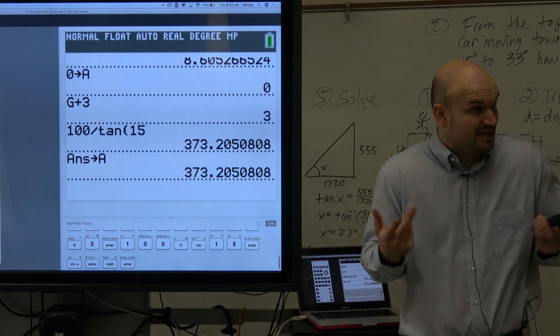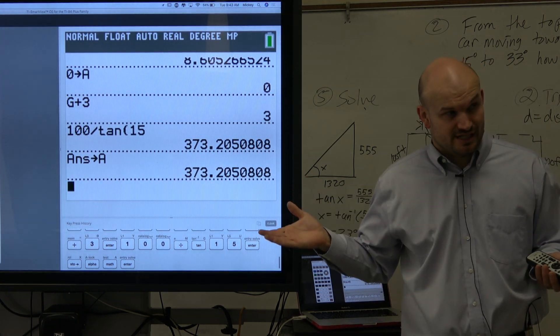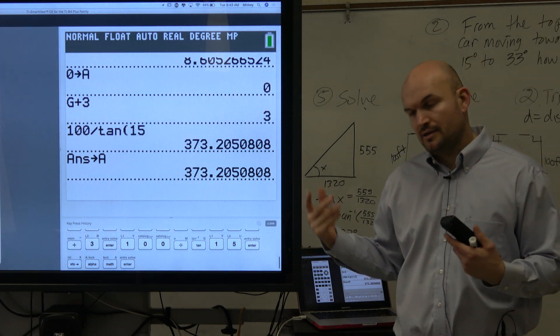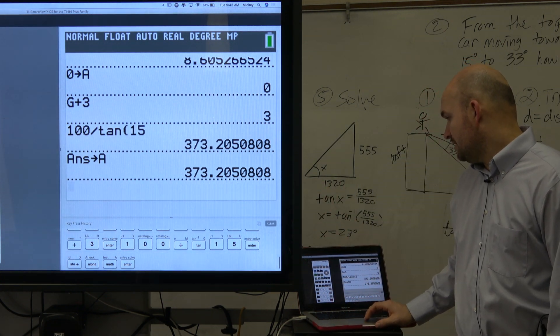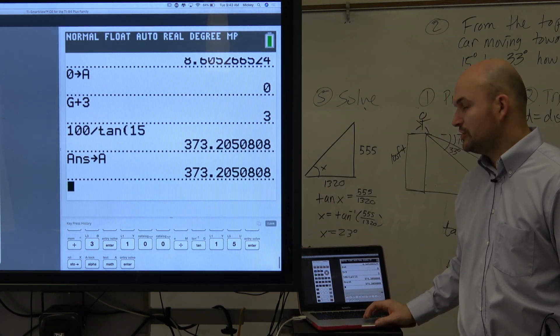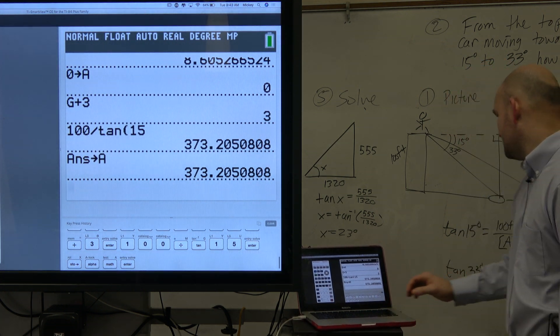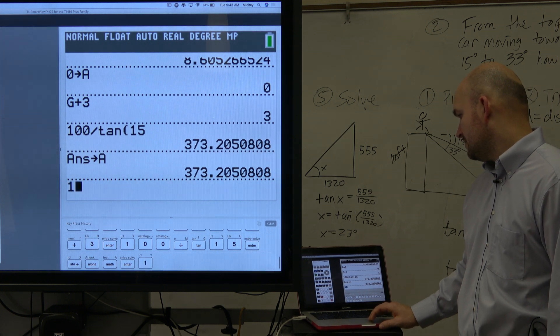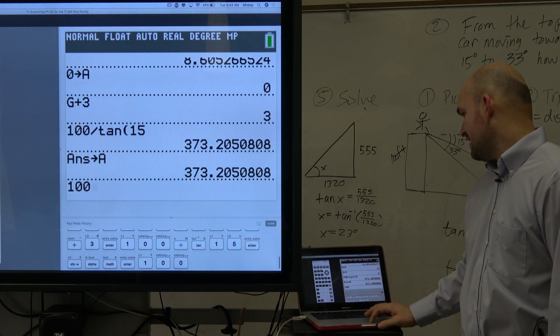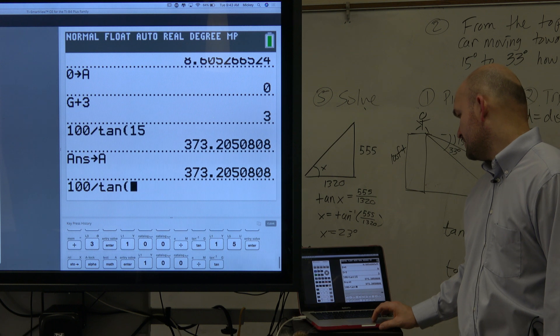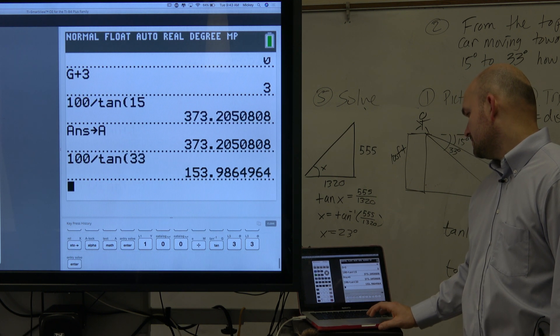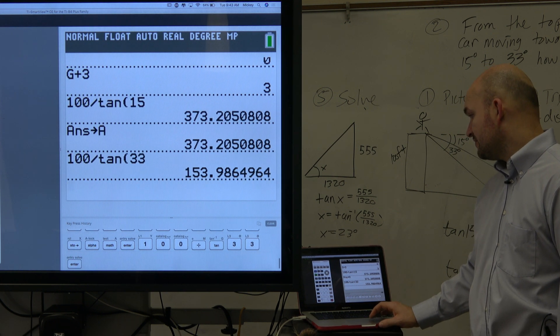And again, remember when I talked about that? Like, you can either store it or you can write out all the digits and then subtract them individually. And then for the next one, I'm just going to, oh, you could use second answer on this one, too. It's not too bad. So then to find b, that's going to be 100 divided by the tangent of 33 degrees. So that's going to be 153.